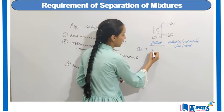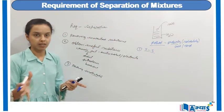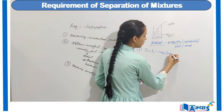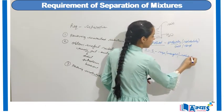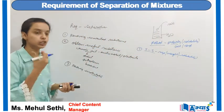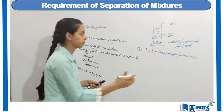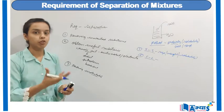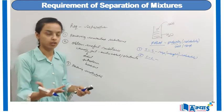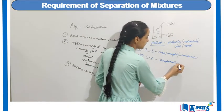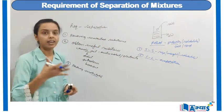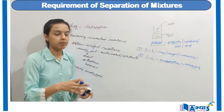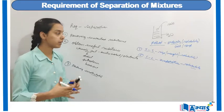If I want to separate two solids from one another, I can use the property of size, as in the case of rice and pebbles, or the property of weight. I can even use the property of solubility, as in the case of salt and sand, where salt dissolves in water and sand remains insoluble. For solid-liquid separation, suppose I want to remove salt from water — I can use the property of evaporation, knowing the boiling points, or use filtration in the case of sand and water.